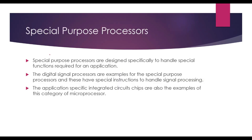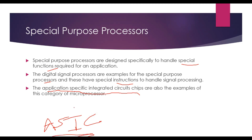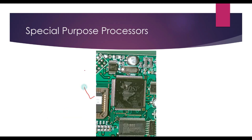The special purpose processor handles special functions for digital signal processing. Digital signal processors are an example of a special purpose processor and they have special instructions to handle signal processing. Another example is the Application Specific Integrated Circuit chip — ASIC. Here is a photo of a DSP processor, which is a digital signal processor.